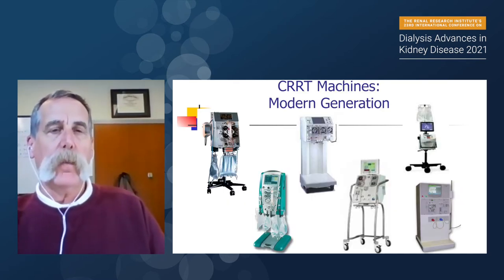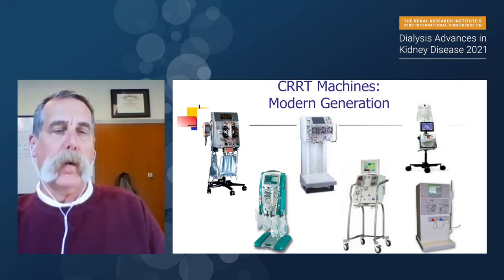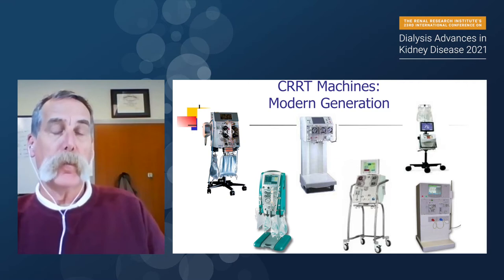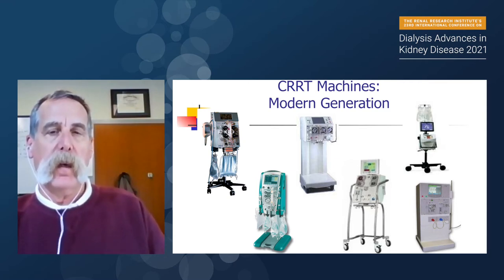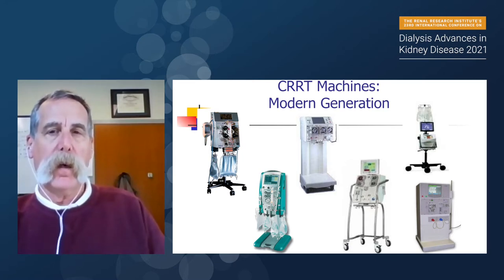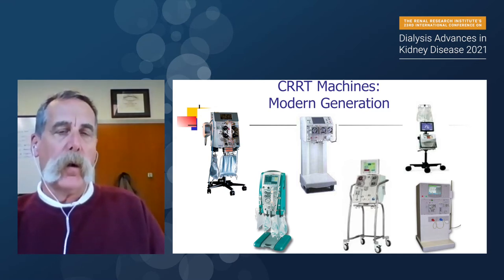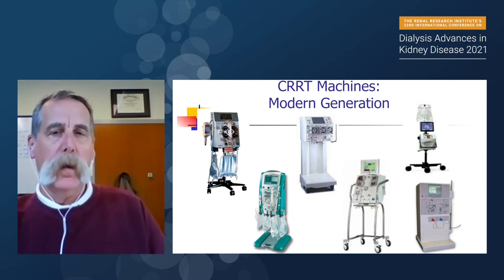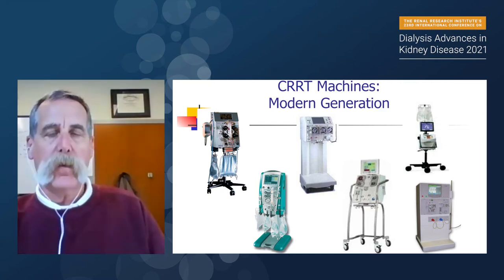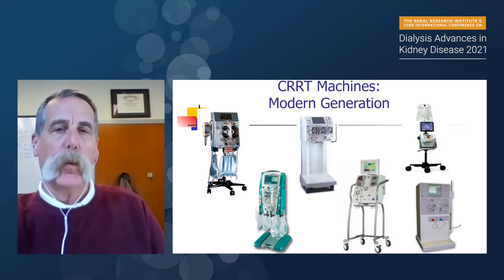These are the various machines currently available in North America and Europe. The Prisma on the far top left has been replaced by the green machine called Prisma Flex. The B. Braun machine is in the middle. The Baxter and Kiesel machines are at the bottom. The NxStage is on the upper right, and the Fresenius machine is mostly used for SLED. All of them are great, all have problems. There is no superior machine — it is what you use at bedside that you're comfortable with.